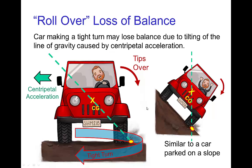We can understand rollover loss of balance when a car takes a tight turn. If the car is taking a very tight turn towards screen left, there is a centripetal acceleration towards the inside of the turn, and the line of gravity tilts towards that acceleration. If the line of gravity tilts enough, the new center of pressure might not be underneath the area around the tires, and the car would tip over. This is similar to a car parked on a slope steep enough that the center of pressure falls outside the base of support.